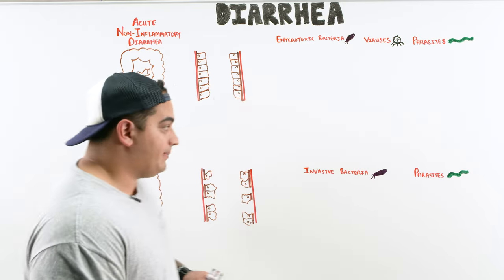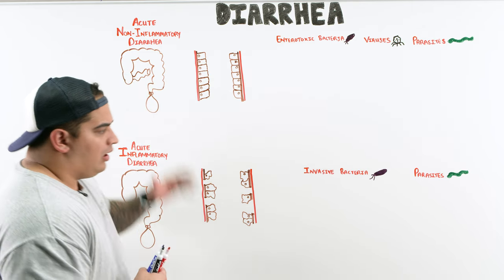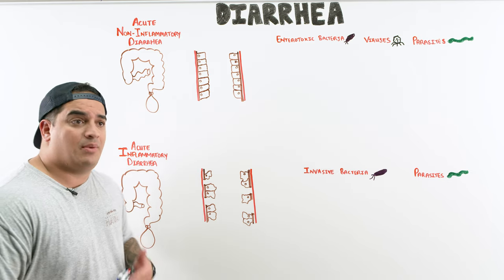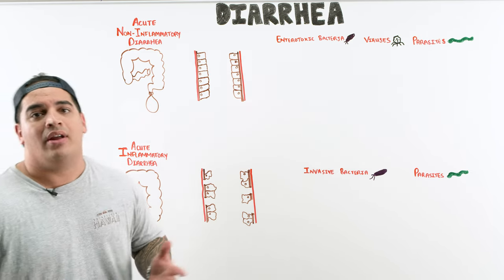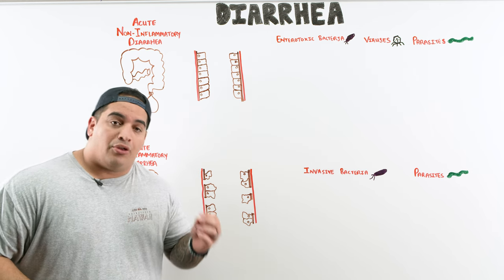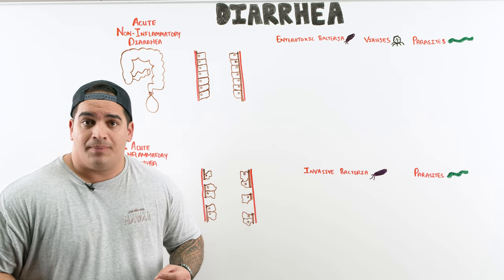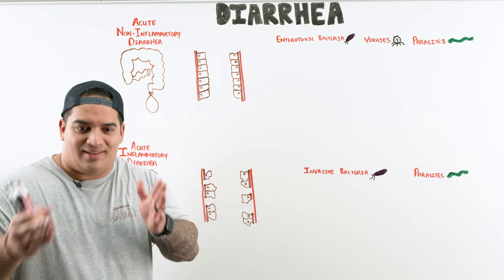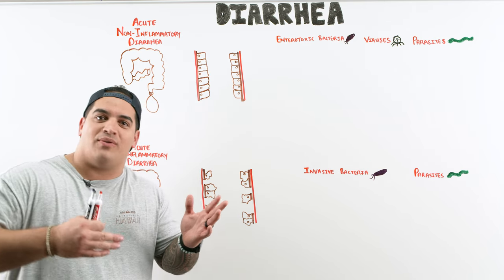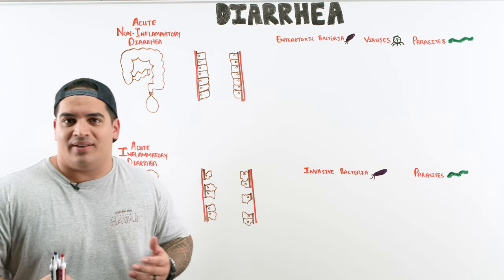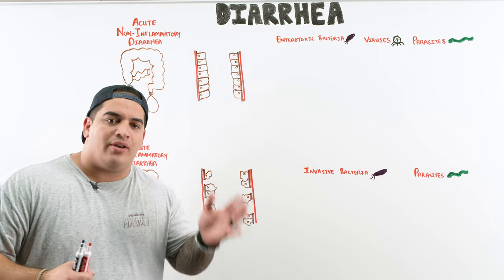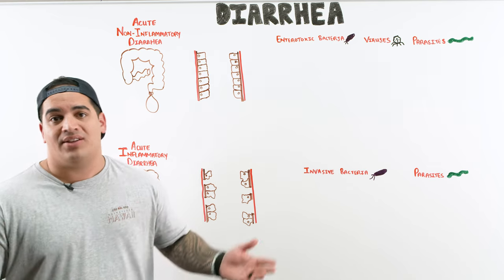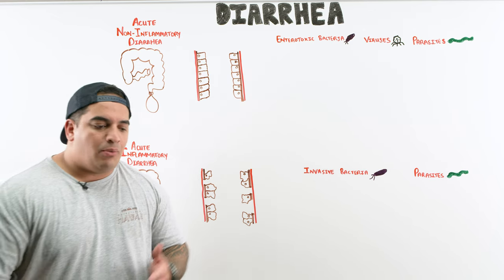Without further ado, let's talk about diarrhea. We'll start with the acute setting. Acute diarrhea is defined as at least three or more loose stools per day for less than two weeks in duration. Once you cross that two-week barrier, you're into chronic diarrhea territory.